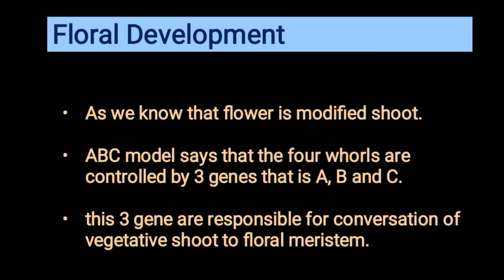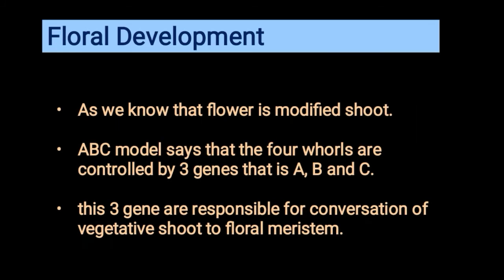As we know, a flower is a modified shoot, which is modified from the vegetative meristem. The ABC model says that the four whorls are controlled by three genes — A, B, and C — and these three genes are responsible for the conversion of vegetative shoot to floral meristem.